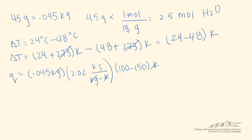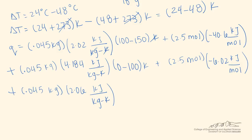The steam-to-liquid transition uses the latent heat formula: 2.5 moles times negative 40.6 kilojoules per mole, which is the negative heat of vaporization from the problem statement. Similarly, you can apply the appropriate formulas for the remaining transitions. Plugging all variables into a calculator gives Q equals negative 147.3 kilojoules.